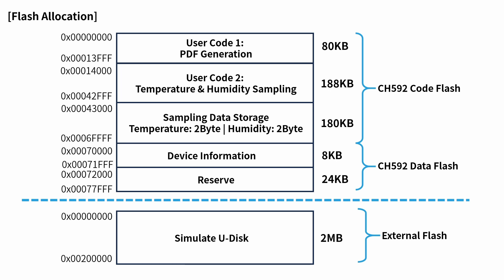For creating the data file, we store the data in memory blocks. The sampling data storage uses two bytes for temperature and two bytes for humidity.